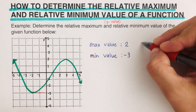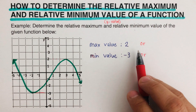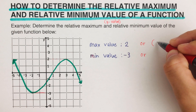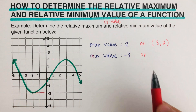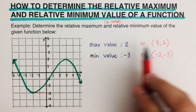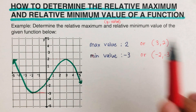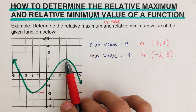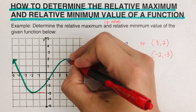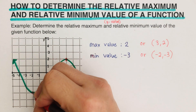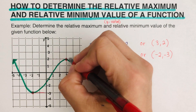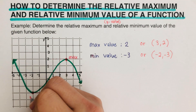Sometimes we can write the relative maximum value and the relative minimum value in terms of coordinates. For this problem, the maximum value is at point (0.3, 2), and the minimum value is at point (negative 2, negative 3). Either notation would be correct. The first notation refers to the y value, while the other notation refers to the point — so this point is the maximum and this point is the minimum.